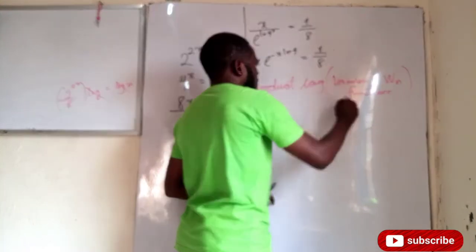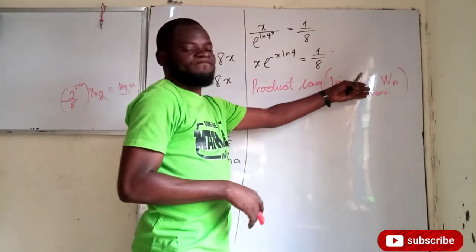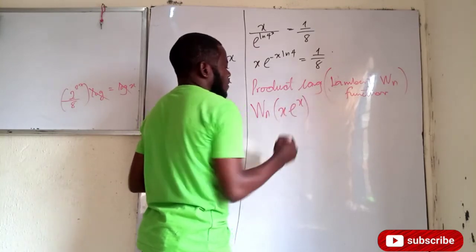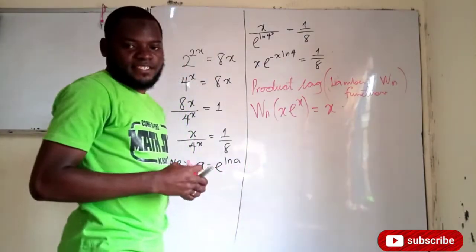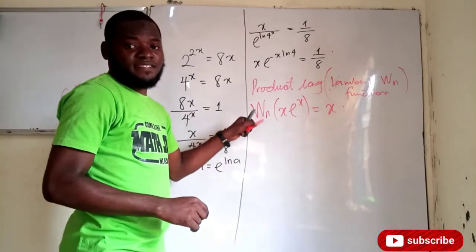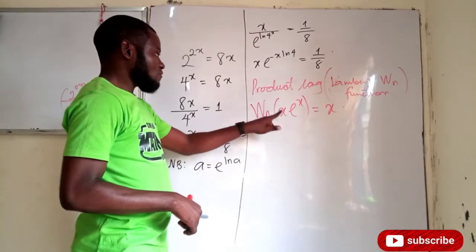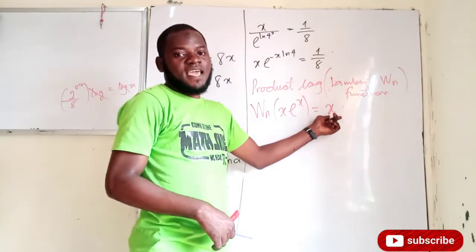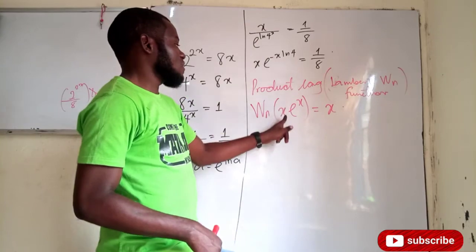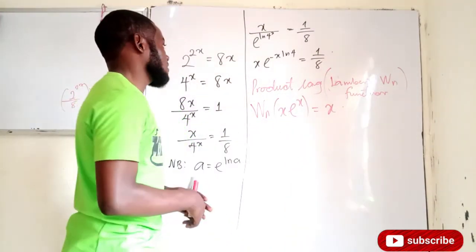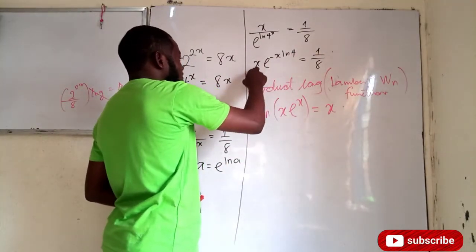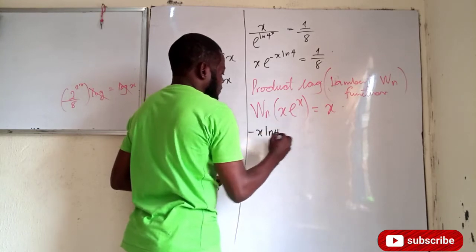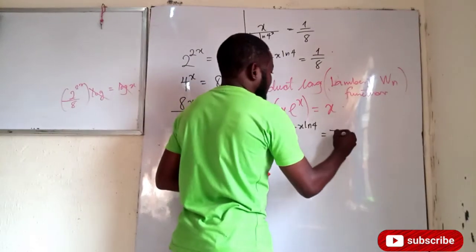The Lambert W function states that if you take W of x times e to the power of x, your result is x. I have a video on questions that require this — you can check that in the description box below. So if this is x·e^x and you take the W function of it, you get x. I can apply this product log here: if I multiply both sides by negative ln 4, I will get the same form as x·e^x.